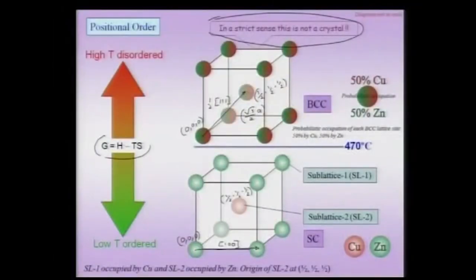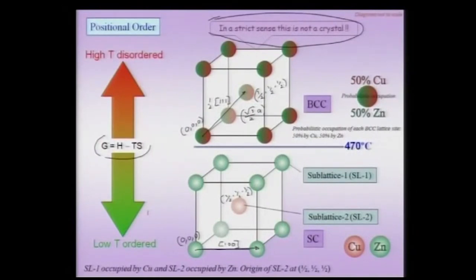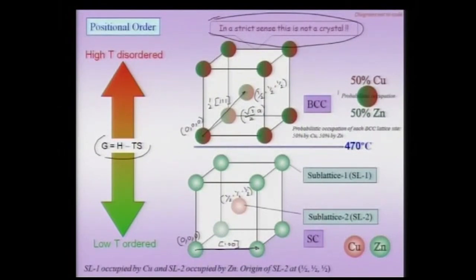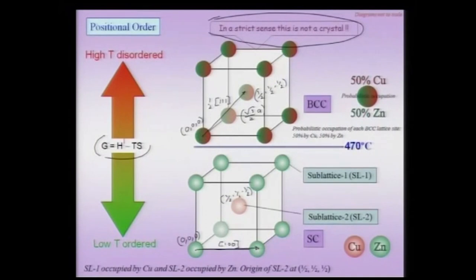Why is the high temperature phase the disordered phase and the low temperature phase the ordered one? The answer lies in the Gibbs free energy. Temperature is the weighing factor for entropy — at higher temperatures the structure with higher entropy is stabilized, and at lower temperature the structure with lower entropy is stabilized. If you have two sub-lattices and the system is completely ordered, one sub-lattice occupied by one element and the other by the other element (copper and zinc in this case), then the number of configurations available is just one. But in the disordered phase there are many configurations, making the system configurationally rich. According to Boltzmann's equation S = k ln Ω, the disordered structure is preferred at high temperature. This is purely coming from Gibbs free energy arguments.